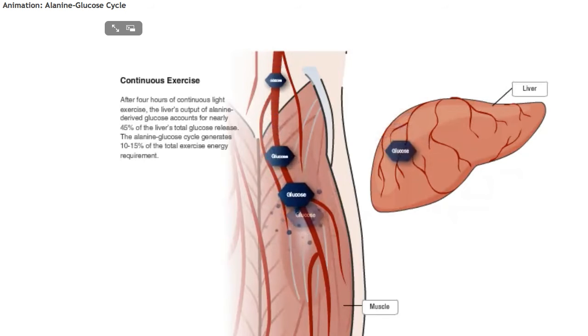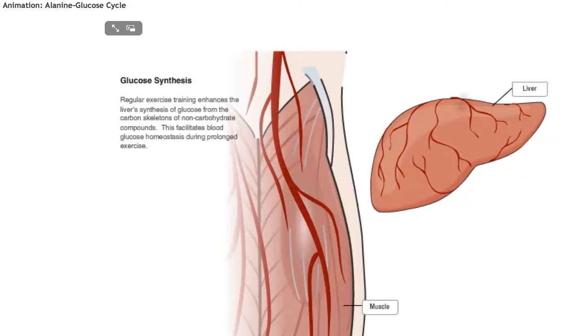The alanine glucose cycle generates 10-15% of the total exercise energy requirement. Regular exercise training enhances the liver's synthesis of glucose from the carbon skeletons of non-carbohydrate compounds. This facilitates blood glucose homeostasis during prolonged exercise.